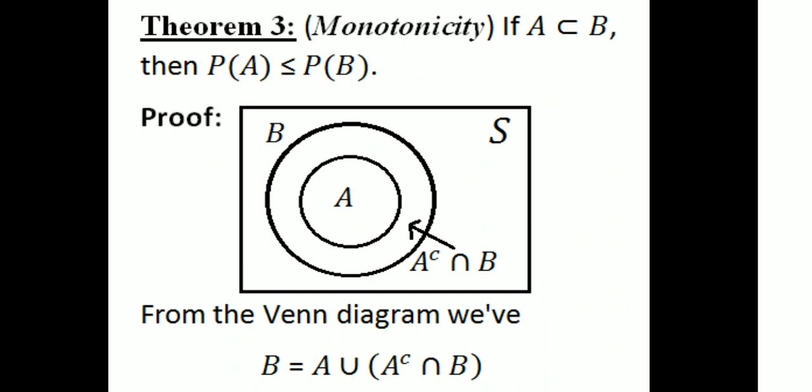Theorem 3: Monotonicity. If A is a subset of B, then P(A) ≤ P(B). That is monotonicity, illustrated via a Venn diagram.